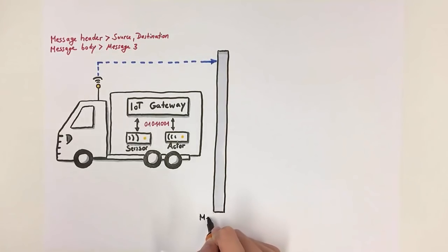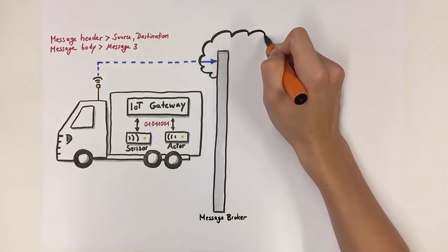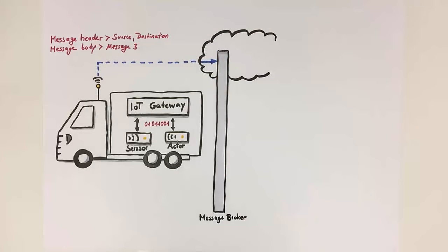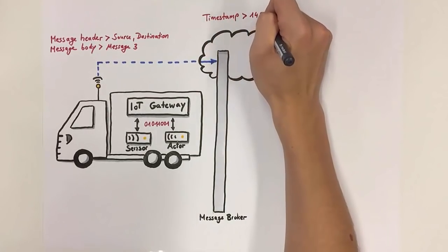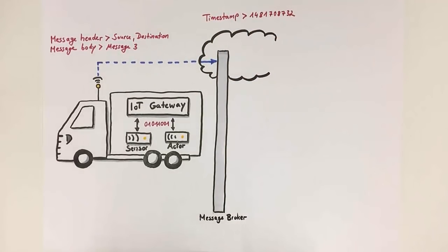With a mobile connection, the data is transmitted to a cloud-based message broker via an internet connection. The data is given a timestamp here and is forwarded to its correct destination.